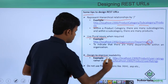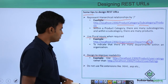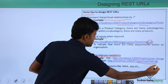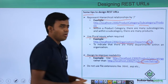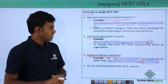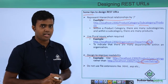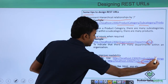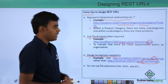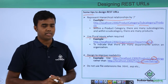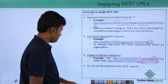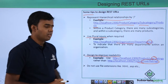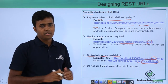The third tip is to improve readability. Rather than saying 'product/user-ratings' as one long word, it is better to separate 'user-ratings' with a hyphen so it is easier for the user to understand. Also, do not use file extensions like .html or .asp, because here we are dealing with resources, not a web page.